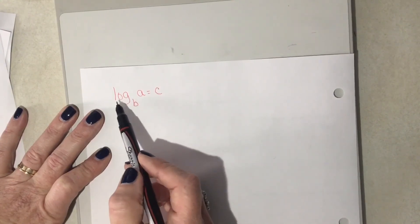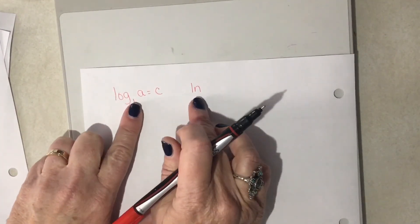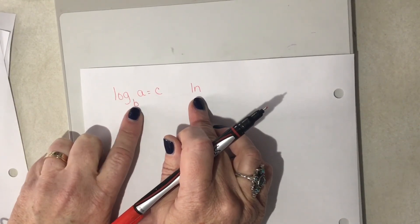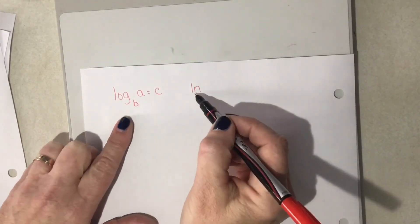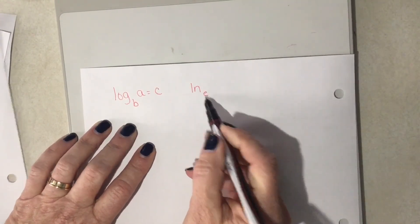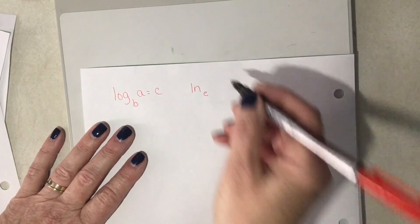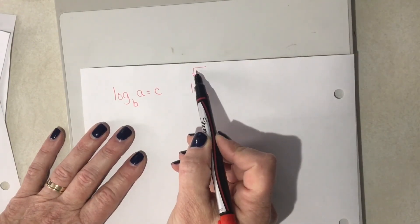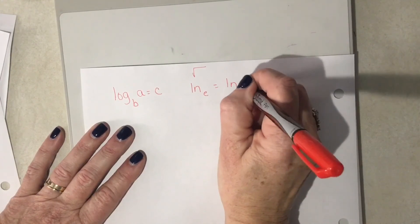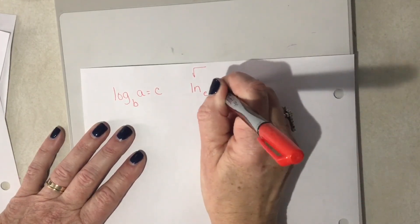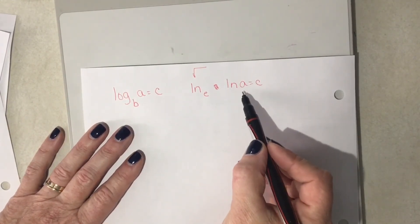In our lesson with logarithms we're also going to see ln, which is called a natural log. A natural log automatically has a base of e, and most times — 99.9% of the time — that e is not written. It's kind of like a square root: we don't put a 2 in there, but we just know that it's a 2. This natural log has a base e, but it's written as just ln — same thing. Natural log base e is what that is, but we just don't have the e written there. It's just assumed.